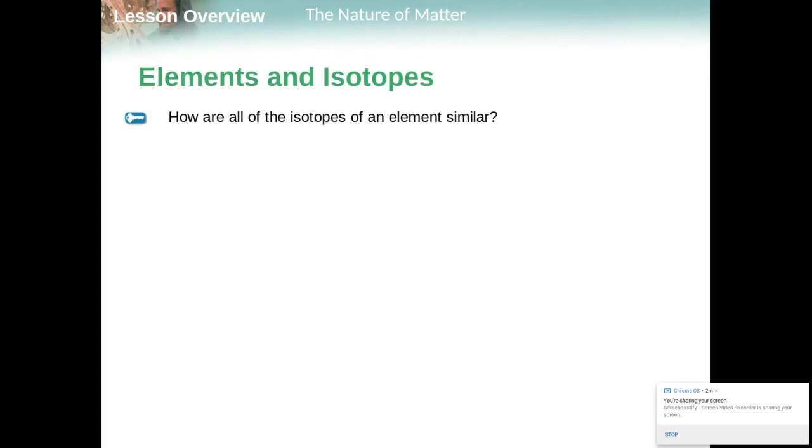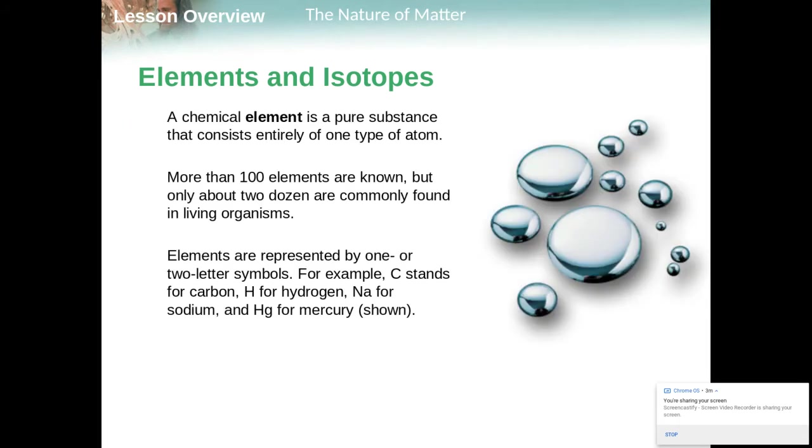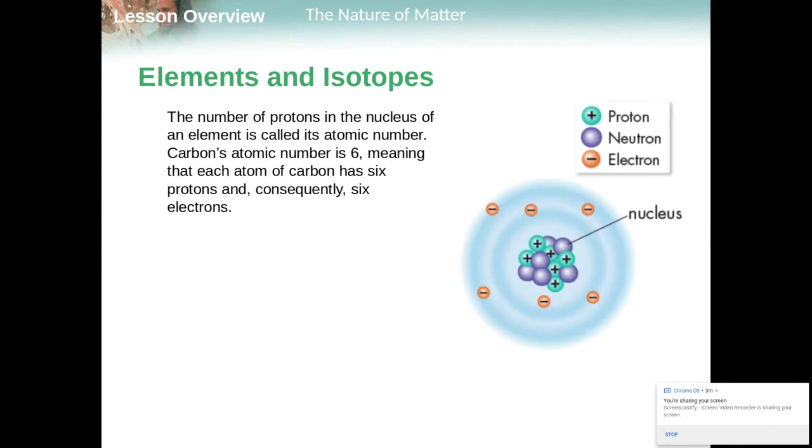That's not always the case. Sometimes we have what are called isotopes. Our next learning goal, how are all the isotopes of an element similar? A chemical element is going to be a pure substance. We see right here in this picture is mercury, sometimes called quicksilver. There are more than 100 elements that are known, but only about 20 are commonly found in living organisms. Carbon, hydrogen, oxygen, nitrogen, all of these that we'll talk about in this course.